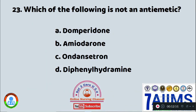Question 23: Which of the following is NOT an anti-emetic? Option A: domperidone. Option B: amiodarone. Option C: ondansetron. Option D: diphenhydramine. The drug amiodarone is not an anti-emetic; it actually stimulates vomiting.